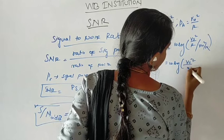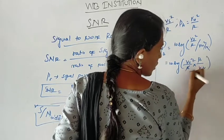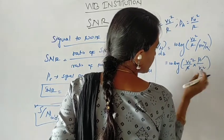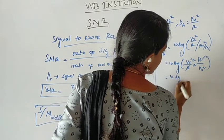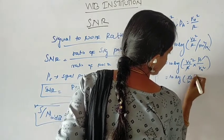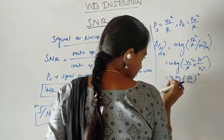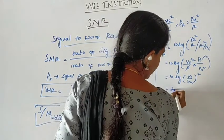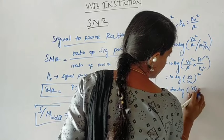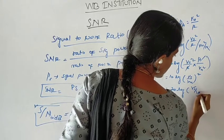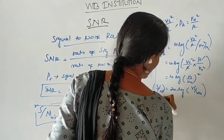Since R cancels out, SNR in dB in terms of voltage is equal to 10 log of VS divided by VN, whole squared. This is the SNR formula in terms of voltage.